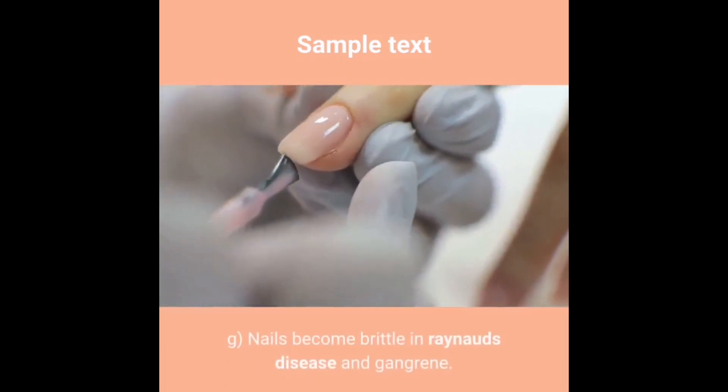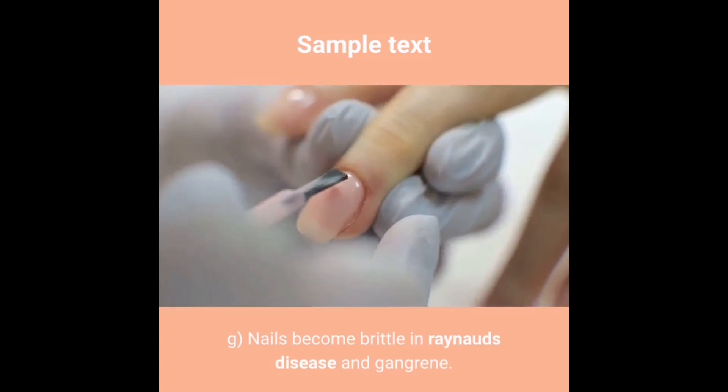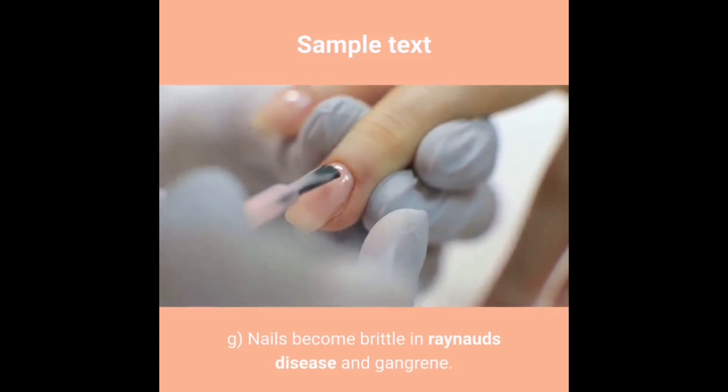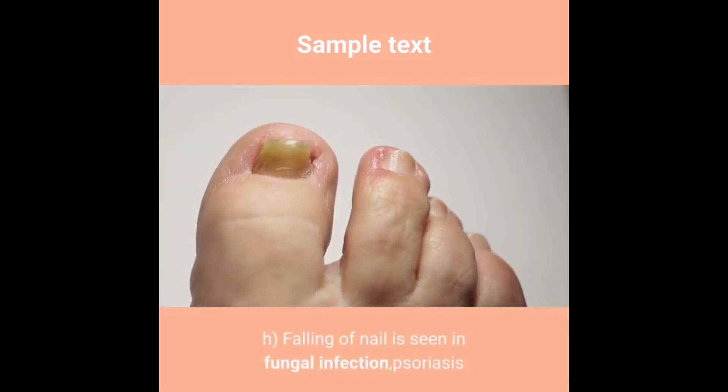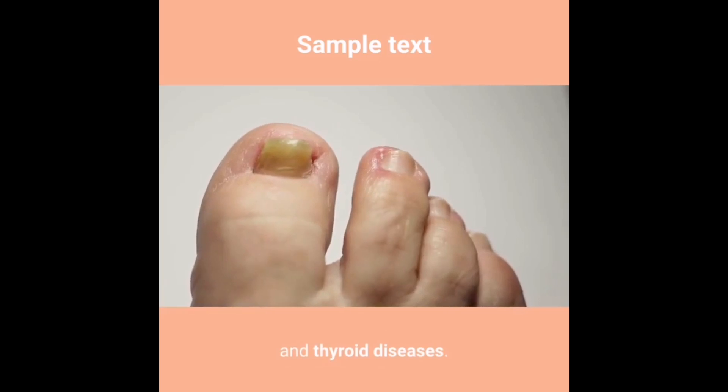G) Nails become brittle in Raynaud's disease and gangrene. H) Falling of nails is seen in fungal infection, psoriasis and thyroid diseases.